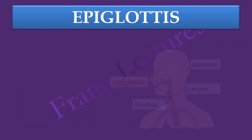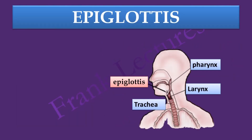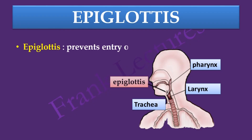The epiglottis is a small lid of cartilage which covers the larynx during swallowing. This prevents the entry of microbes into the lower respiratory tract.